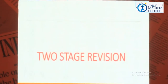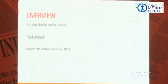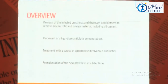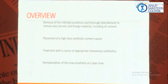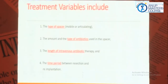Now let's come back to my topic, that is the two-stage revision. First described by Insall in 1983, the success rate varies from 85 to 100%. In two-stage protocol, we remove the prosthesis because you have the collection and formation of biofilm and antibiotics are not permeable to that. You place a high-dose antibiotic cement spacer, and appropriate antibiotics are given for appropriate time. Then you re-implant a newer prosthesis at a later time. Variables to discuss include: types of spacer, type of antibiotics, length of antibiotic therapy, intravenous versus oral antibiotics, and the ideal timing.